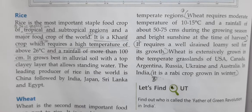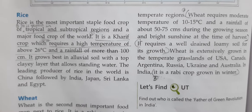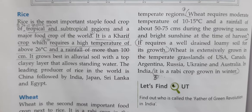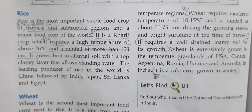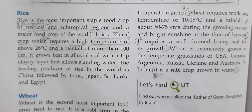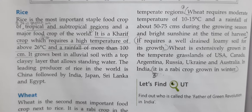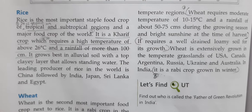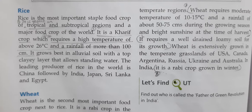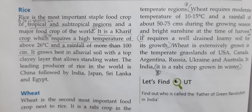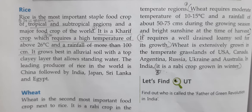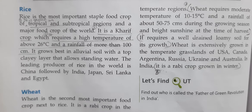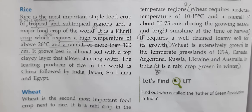Students, we will study about the chapter of social studies, that is geography, chapter number four: Agriculture, backbone of Indian economy. So let's start the remaining paragraph — rice. Rice is the most important staple food crop of tropical and subtropical regions and a major food crop of the world.